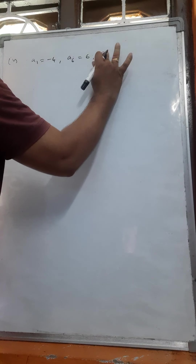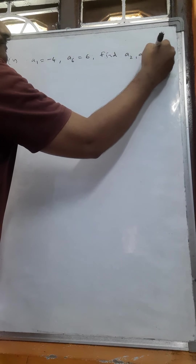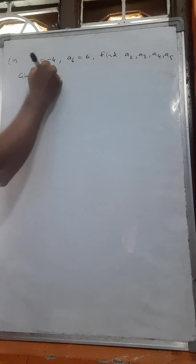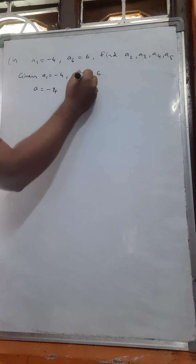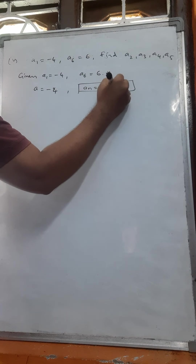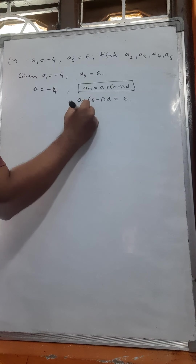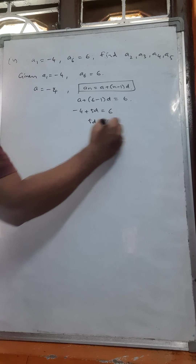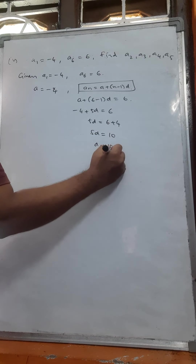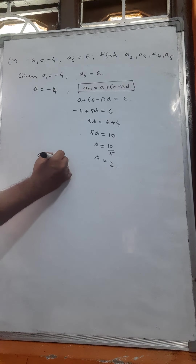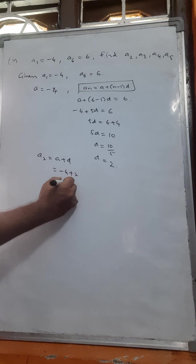Fourth problem: a1 is equal to minus 4, a6 is equal to 6. Find a2, a3, a4, a5. Given a1 equals minus 4, so a is equal to minus 4. Using the formula, a6 equals a plus 6 minus 1 into d is equal to 6. Minus 4 plus 5d is equal to 6, so 5d is equal to 10, d is equal to 2. So a2 equals a plus d: minus 4 plus 2 equals minus 2.